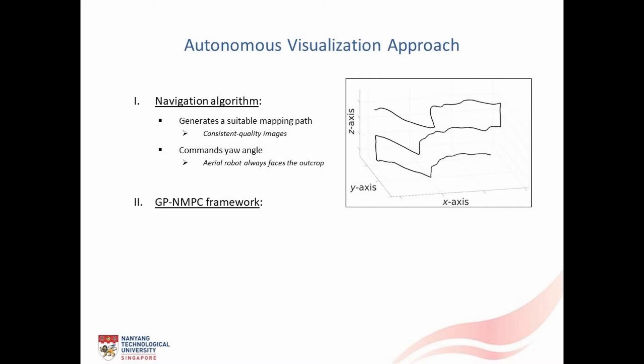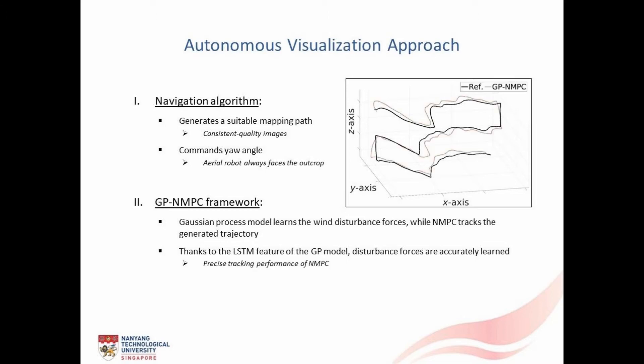As the second aspect, we incorporate a non-linear model predictive controller in conjunction with a Gaussian process based regression technique. Wherein, the NMPC tracks the generated trajectory while the GP learns the wind disturbance forces. Thanks to the long short term memory feature of the designed GP model, disturbance forces are accurately learned. Consequently, a precise tracking performance is realized from the NMPC.